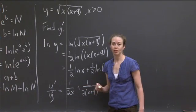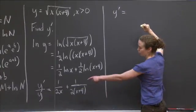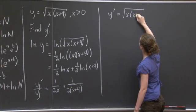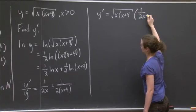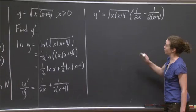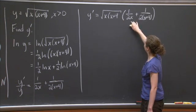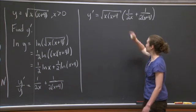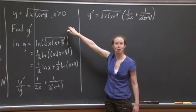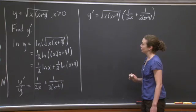To find y prime, I multiply both sides by y. Since y is the square root of x times x plus 4, y prime equals the square root of x times x plus 4, times the quantity 1 over 2x plus 1 over 2 times x plus 4. This is one valid way to write the derivative. I could combine the fractions into a single fraction, or leave it as is — this is technically correct. Log differentiation gives a nice short path to the derivative. See you in the next video.